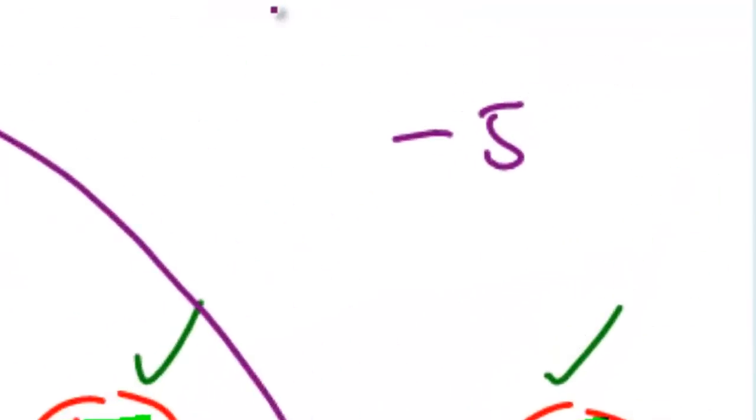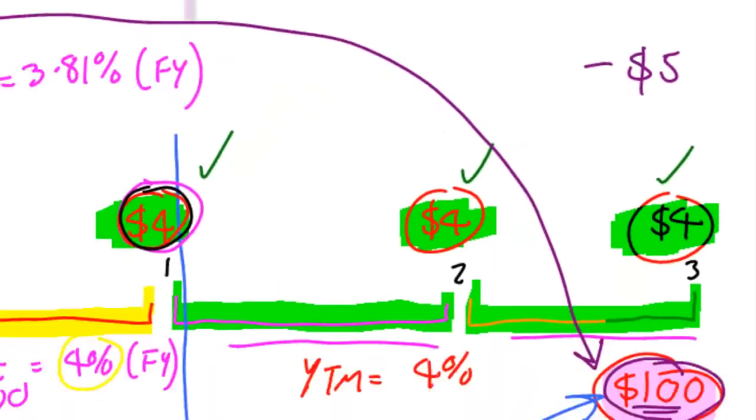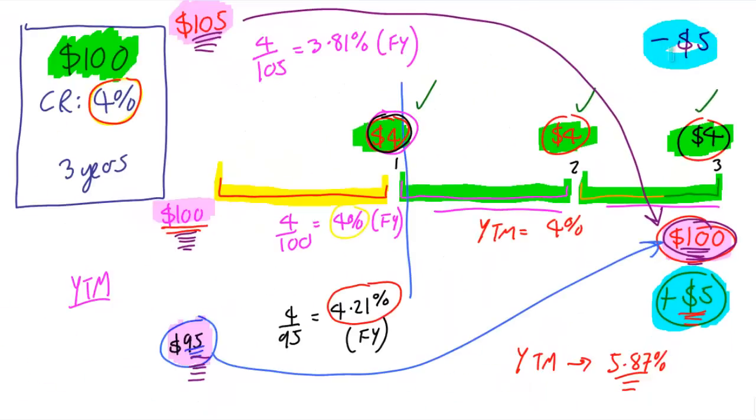So we need to take into account this loss of $5. Let me just put the dollar symbol on there to make sure that we know it's money, real money. Could be $5 million, of course. So we're losing money here. We need to take that into account.